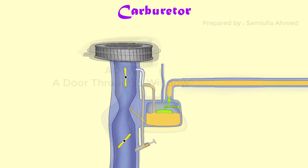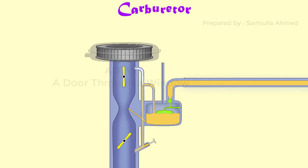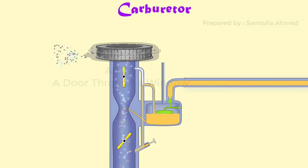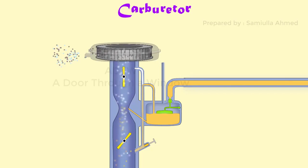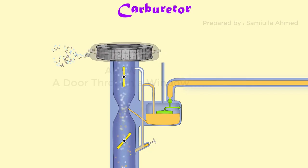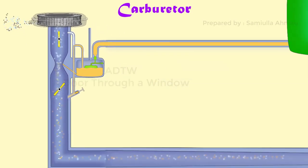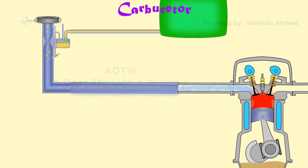Hello everyone, in this video I will be explaining about simple carburetor. The function of the carburetor is to produce combustible air-fuel mixture by mixing the proper amount of fuel with air as per the engine load requirement before supplying charge to the engine cylinder.